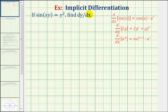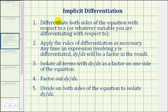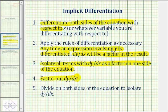Let's start with a quick review of implicit differentiation. We'll first differentiate both sides of the equation with respect to x. Then we'll apply the rules of differentiation as we normally do, but any time an expression involving y is differentiated, dy/dx will be a factor of the result — because we'll be applying the chain rule. Then we'll isolate all the terms with dy/dx as a factor on one side of the equation. If there's more than one term with dy/dx, we'll factor out dy/dx and then divide both sides of the equation to isolate dy/dx.